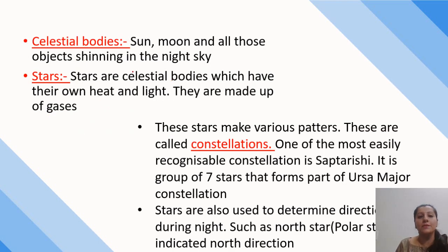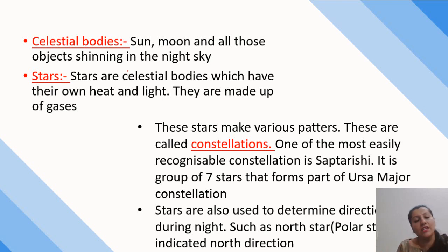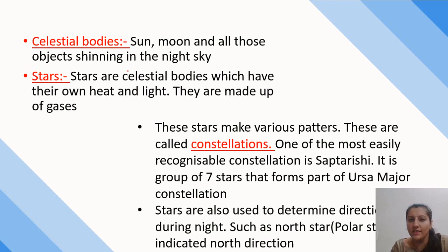Then come celestial bodies. Celestial bodies are objects which may or may not have their own light, but what we see in the night sky — all of these are categorized as celestial bodies. Examples include the sun, moon, stars, etc.